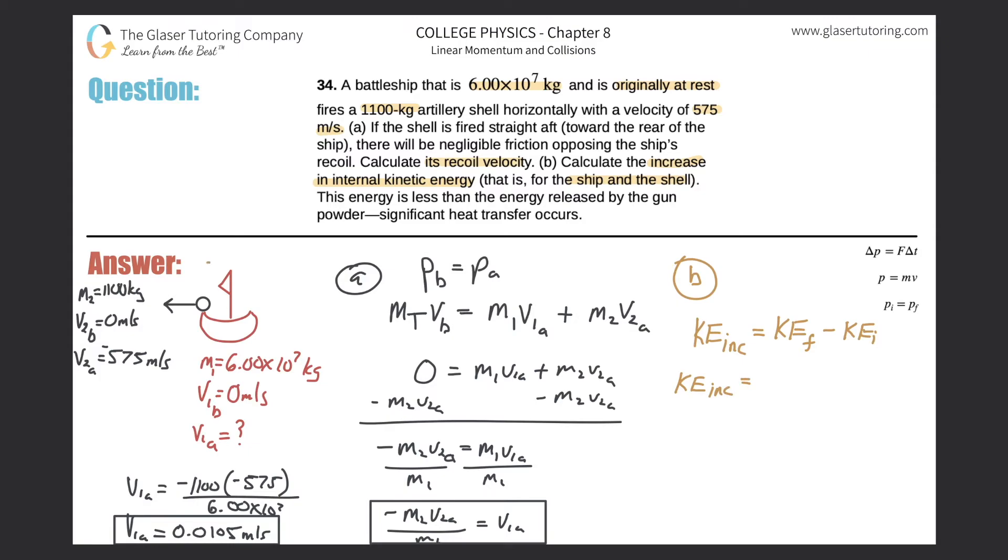So the kinetic energy increase would be equal to the final kinetic energy. Now think about the nature. After the shell gets fired from the ship, which is now moving that way, we have two separate objects. They are not bound together anymore. So therefore, the final kinetic energy can be rewritten as the kinetic energy of the battleship, which is one, plus the kinetic energy of the artillery shell. That should make sense. So that's all the final. And then minus the initial. Remember, the initial kinetic energy was where the artillery shell and the ship were bound together. So kinetic energy initially.